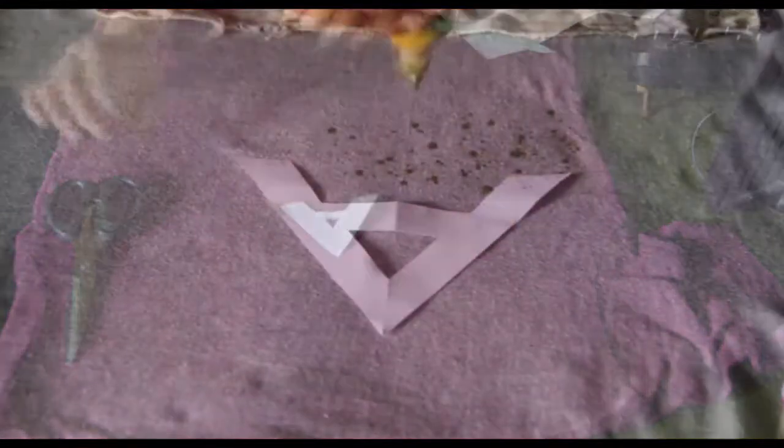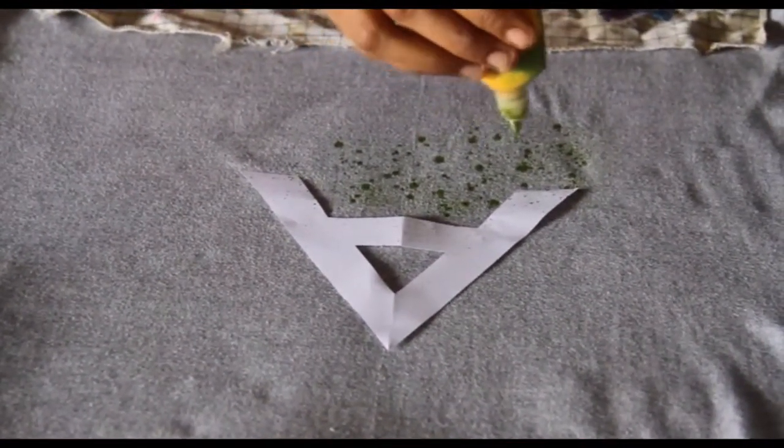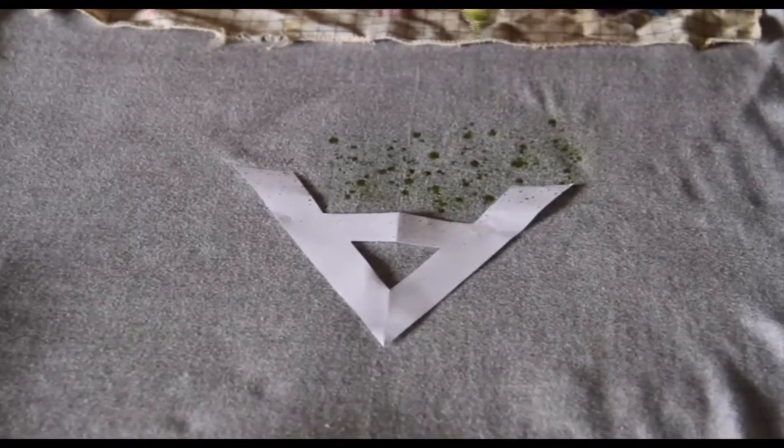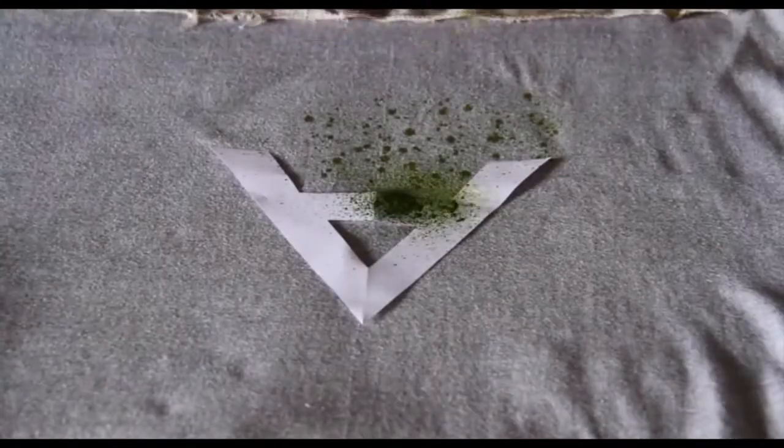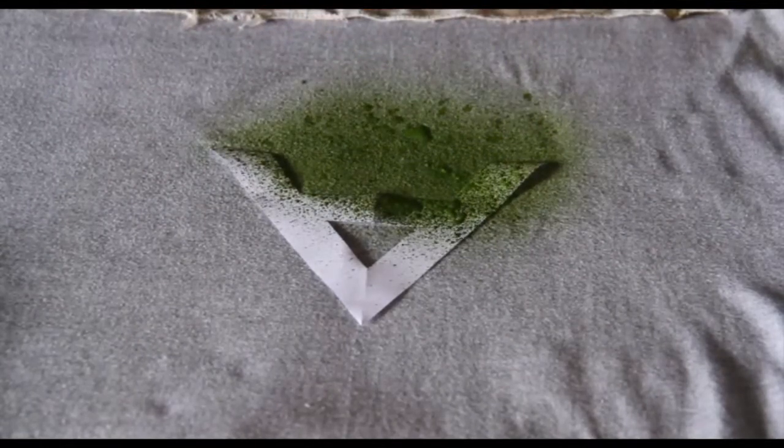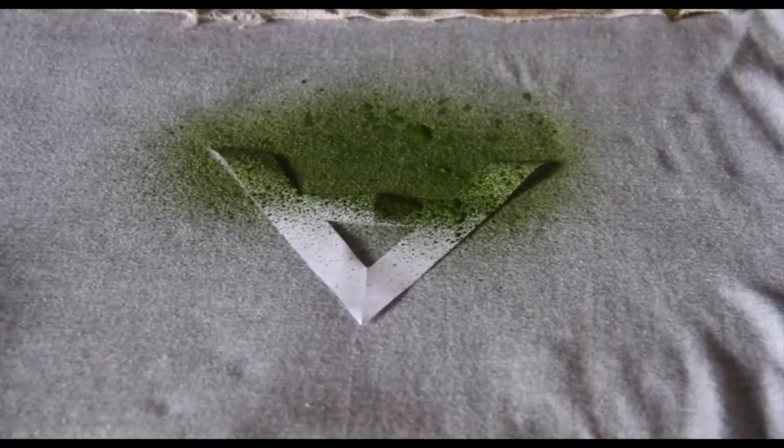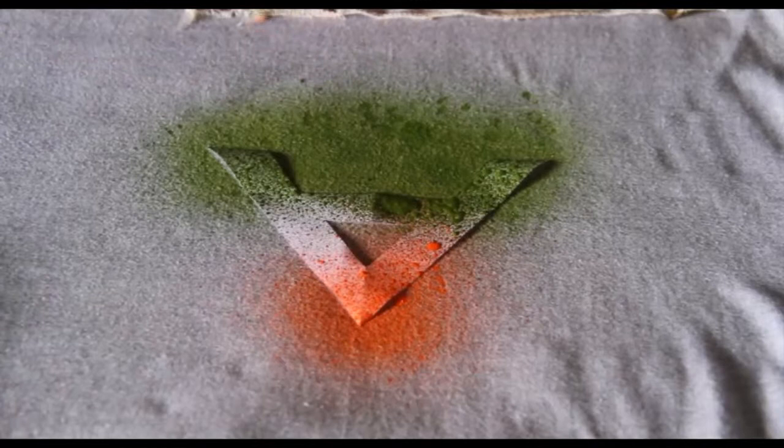Now I place the alphabet letter on the t-shirt and sprinkle the colors. I'm using fabric colors, but you can use any colors you want. This is very easy to do, even in just one minute.